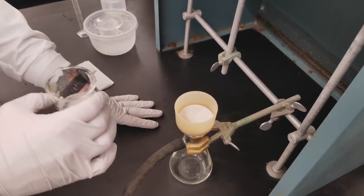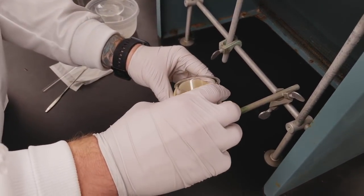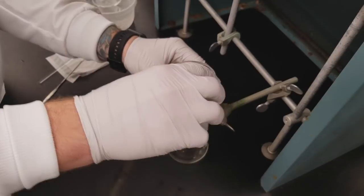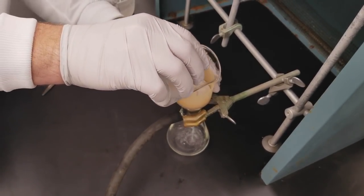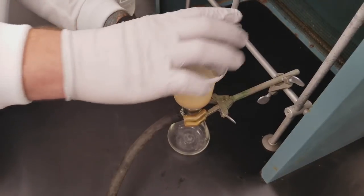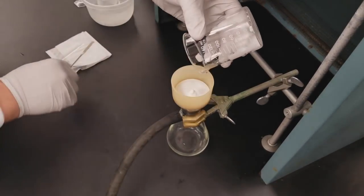So you want to swirl your beaker that has your solid in it, agitate everything and then just pour it over. You want to pour it toward the middle of the filter paper, that way your solid doesn't get sucked underneath it.